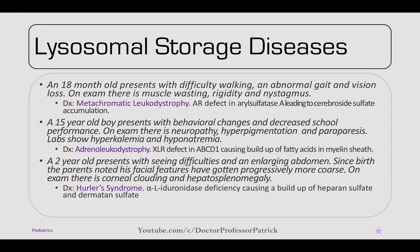A two-year-old boy presents with seeing difficulties and an enlarging abdomen. His parents have noted his facial features have become progressively coarse. On exam, there is corneal clouding and hepatosplenomegaly — this is Hurler syndrome, an alpha-L-iduronidase deficiency causing buildup of heparan sulfate and dermatan sulfate. Compare with Hunter syndrome, which is X-linked recessive, and notably has no corneal clouding.